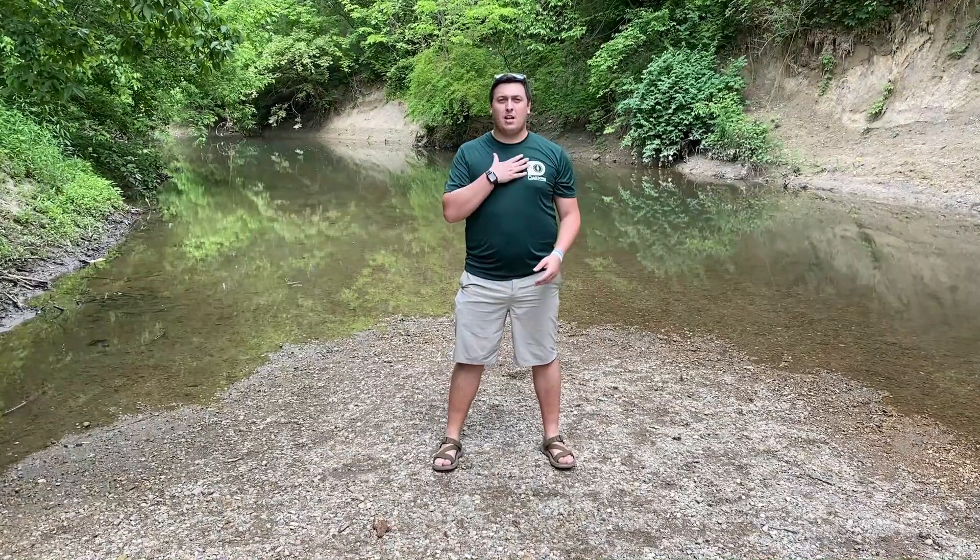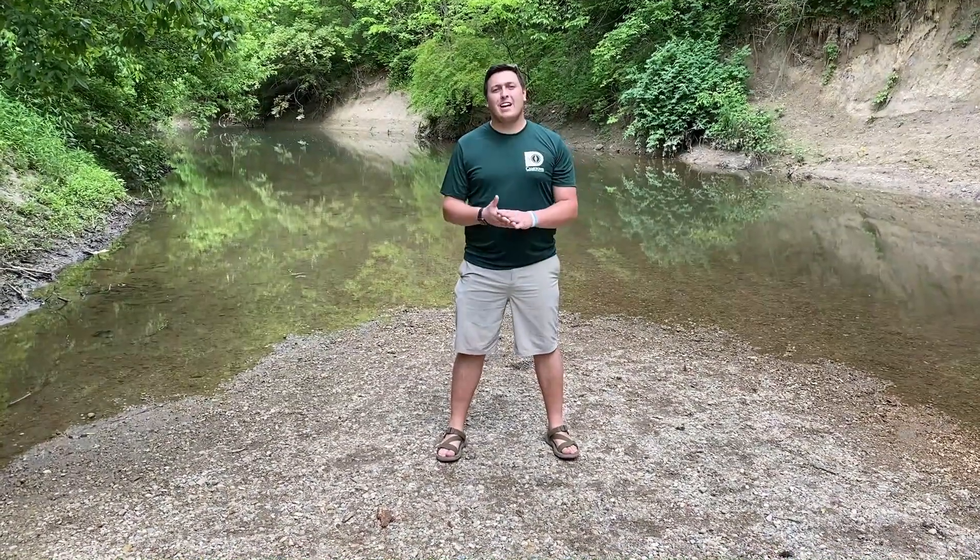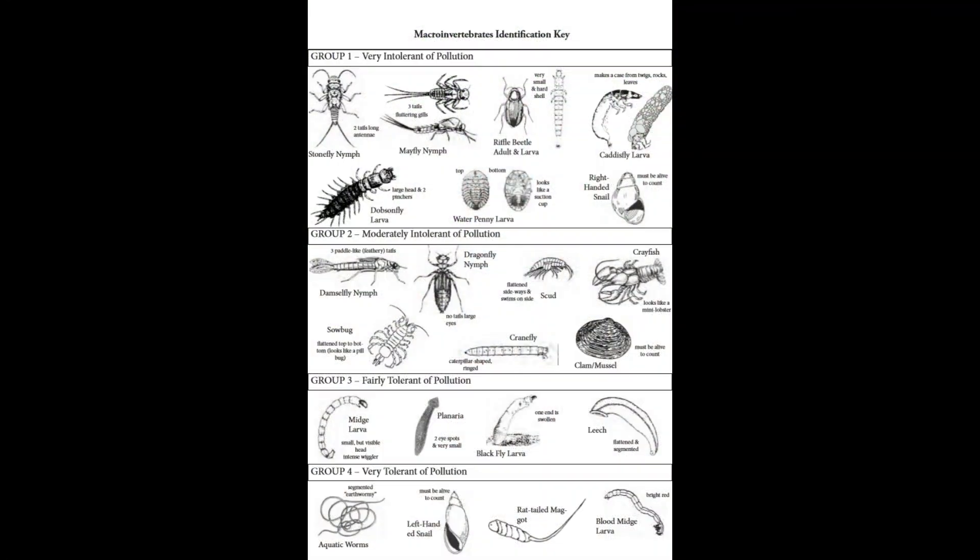Hey guys, welcome back to our Nature 101 series about creeks and streams. I'm Colin from Camp Town and we are actually talking about invertebrates today. An invertebrate is an animal that does not have a spine or a backbone.